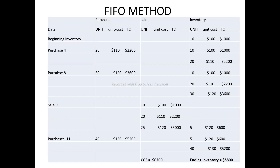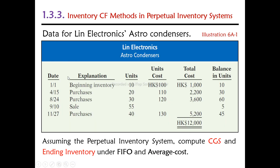The FIFO table includes: Purchase — unit, unit cost, total cost; Sale — unit, unit cost, total cost; and Inventory — unit, unit cost, total cost.